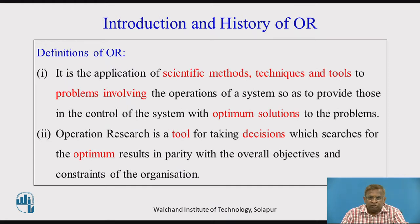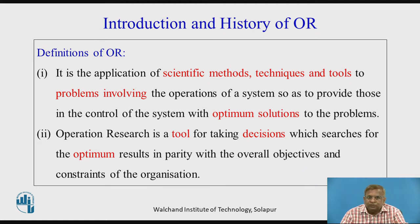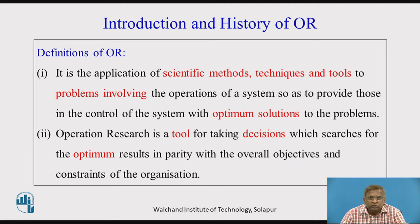Different authors have given different definitions of Operations Research, but focus on the keywords highlighted in red. The first definition says it is an application of scientific methods, techniques, and tools to problems involving operations in any system — manufacturing or otherwise — so as to provide those in control of the system with an optimum solution. So the keywords are: optimum solution, different tools and techniques, and problem solving regarding their activities or operations.